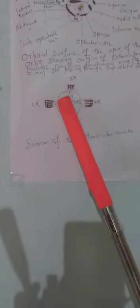The limbus has three clinical significances: epithelial neoplasm is quite common at the limbus; incision is taken at the limbus during cataract surgery; and it is also relevant in glaucoma surgery.